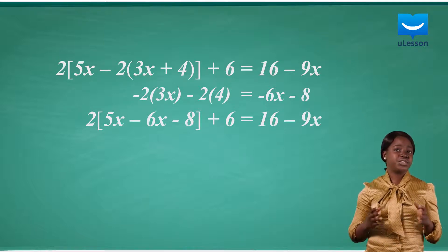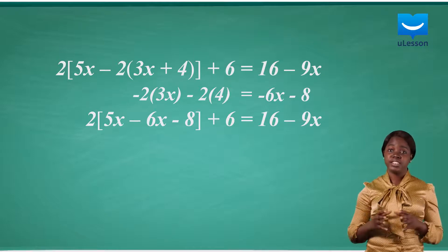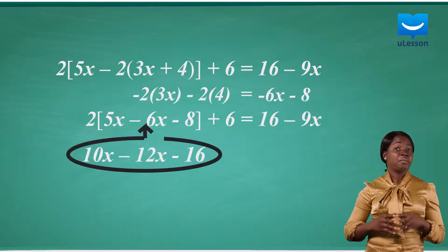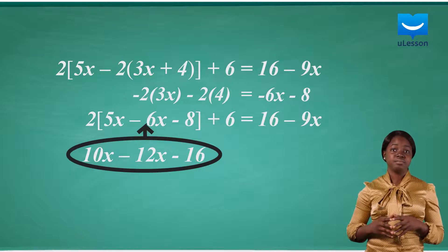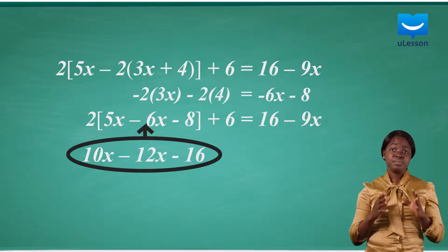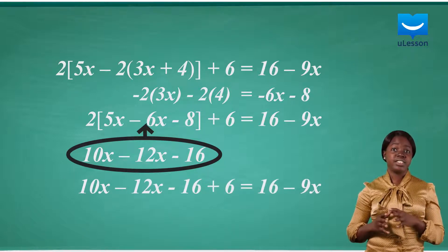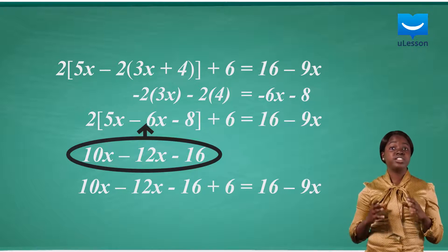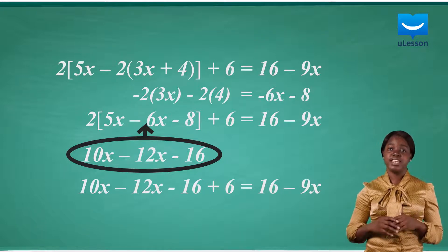Let's proceed to the next stage, which is to open the bigger brackets. So we have 10x minus 12x minus 16. The equation becomes 10x minus 12x minus 16 plus 6, which is equal to 16 minus 9x.